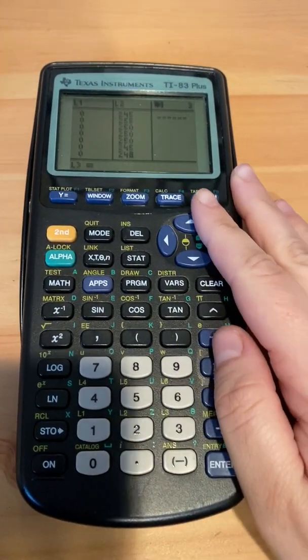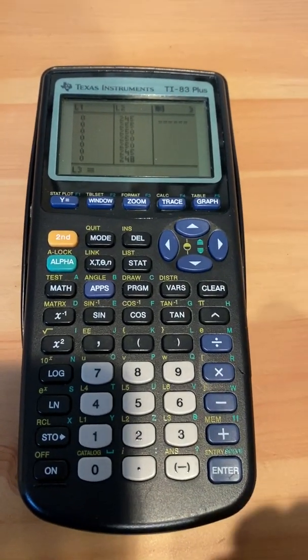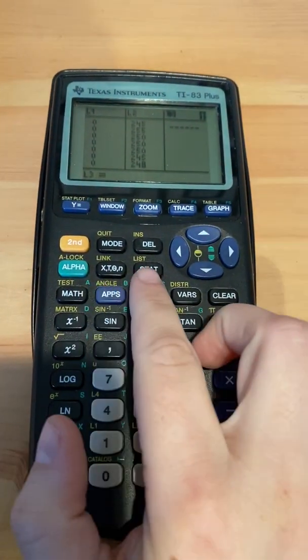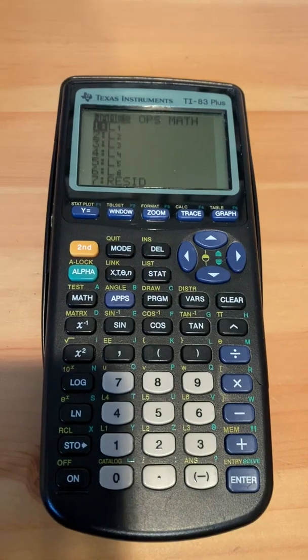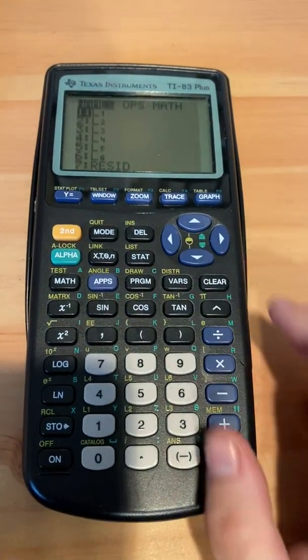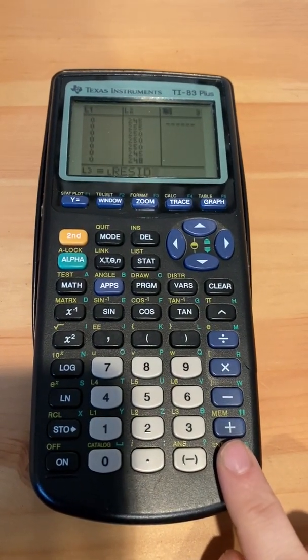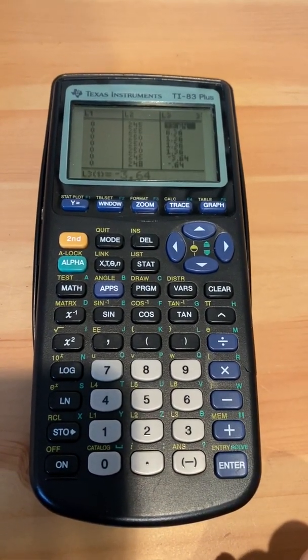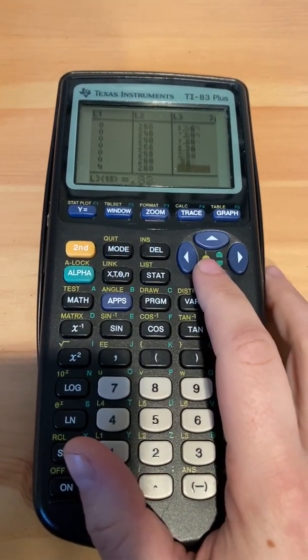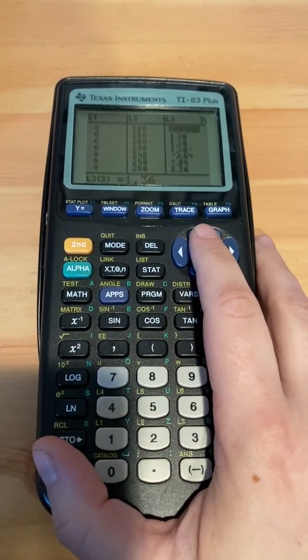And so what we're going to do is we're going to actually pull the residuals. So what you're going to do is push second and then list. All right, and so now we're going to scroll all the way down here to number seven where it says resid. You're going to press enter, enter again, and lo and behold, now we have the list of residuals.